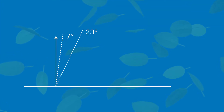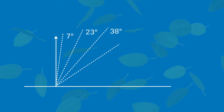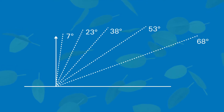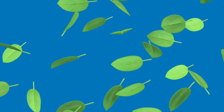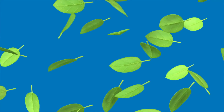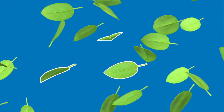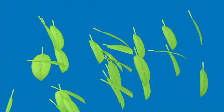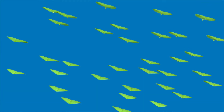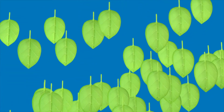If we measure the gap fraction at several angles of view, it turns out we can also deduce something about the leaves' orientation — are they laying flat, vertical, or something in between? If all the leaves in the canopy are vertical, your view of the sky is barely blocked looking straight up. But if you look more toward the horizon, your view is mostly blocked.